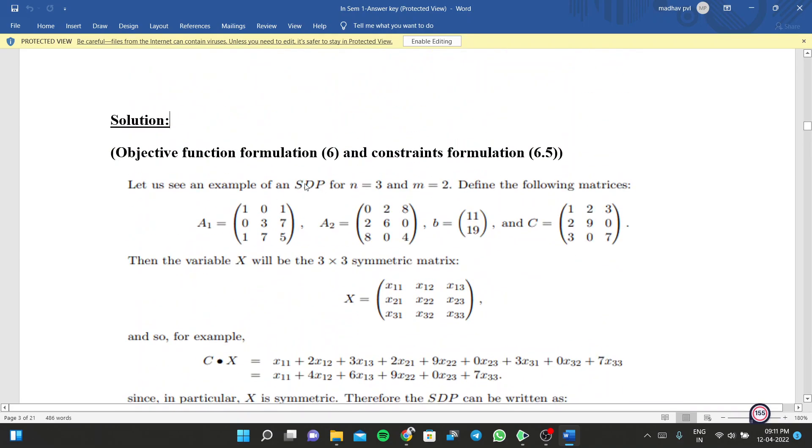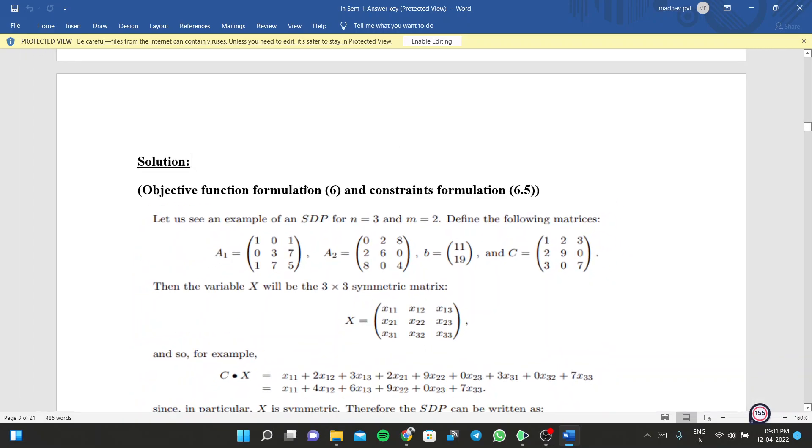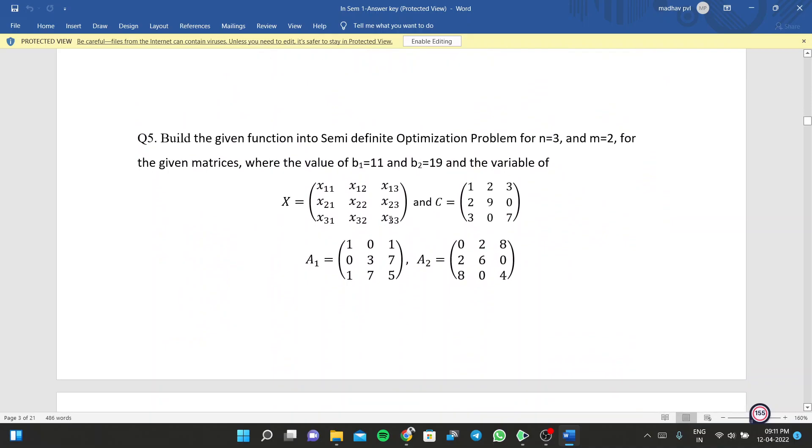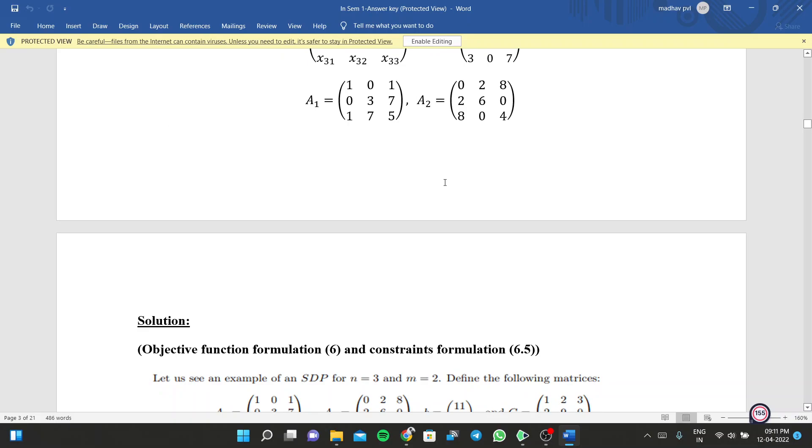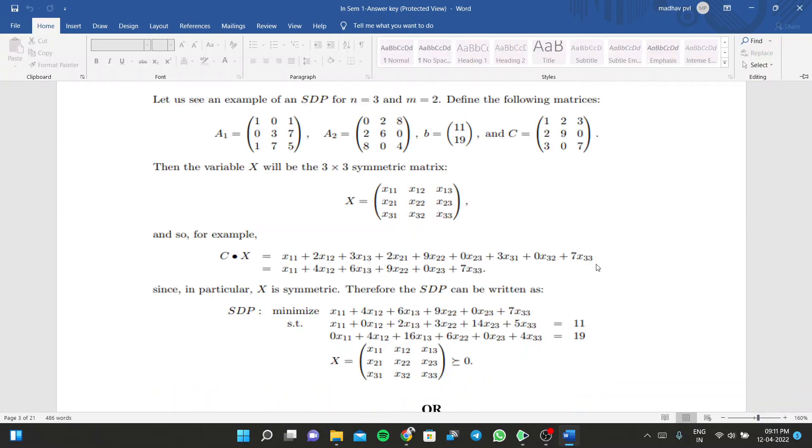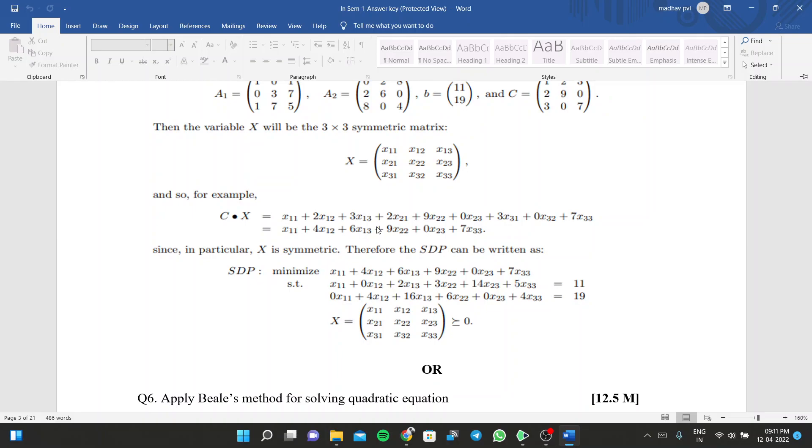Objective function formation - this is also one important question. Here what it is: x value is given, c value is given, a1, a2 are given. Here what we need to do is: c into x one equation, a1 into x one equation, a2 into x one equation. We draw three equations. After building up three equations, the one and only thing you need to remember is one two, two one - these values, both should be equal. Here two x one two, two x two one - make both equal to four x one two. One two two one, one three three one - common for both. Similarly for two two, three three, one one. By computing these, solve as three three equations.